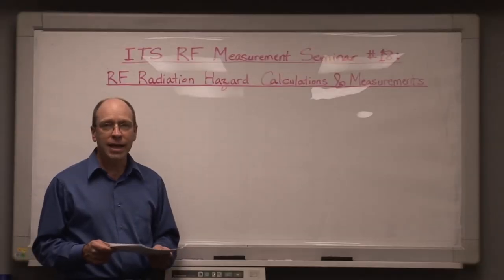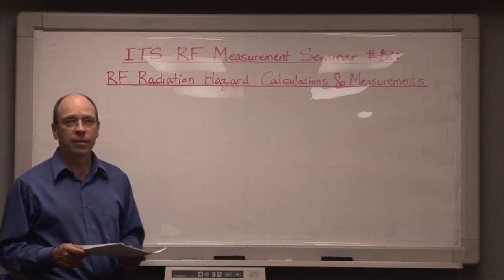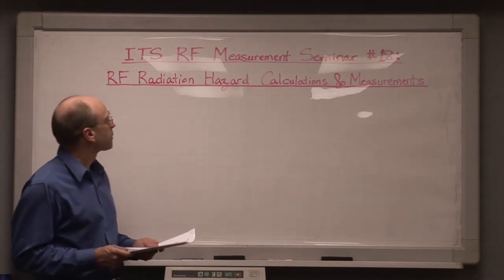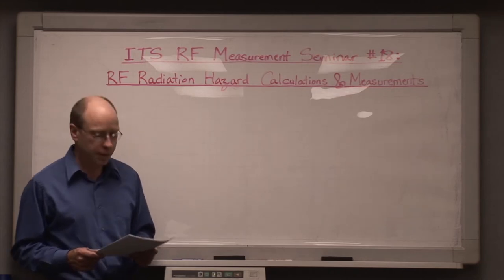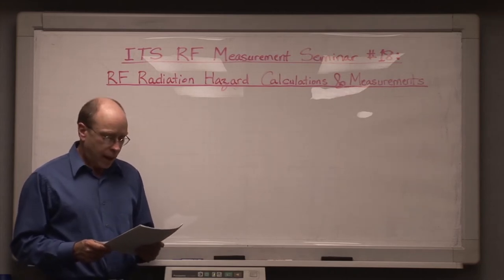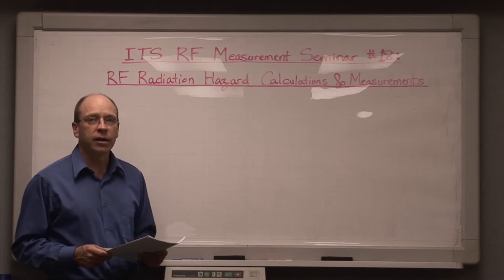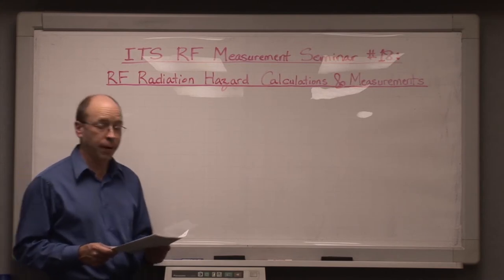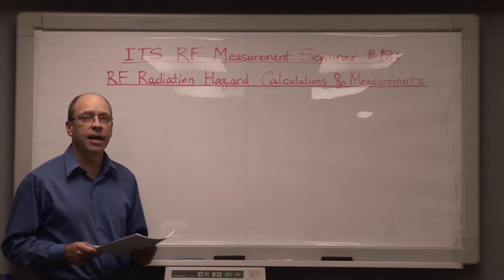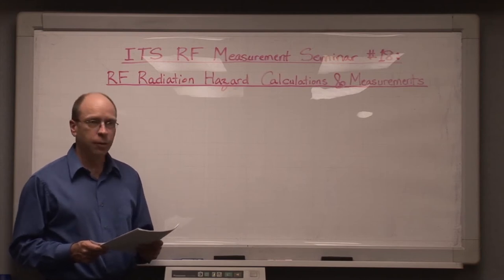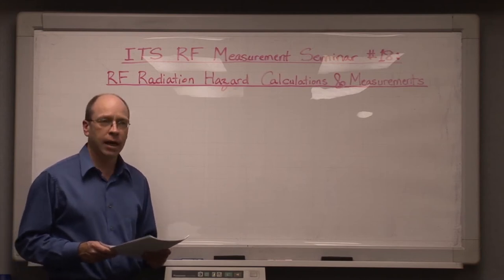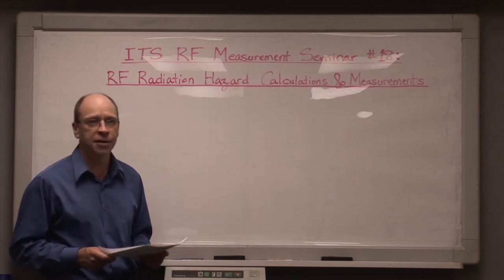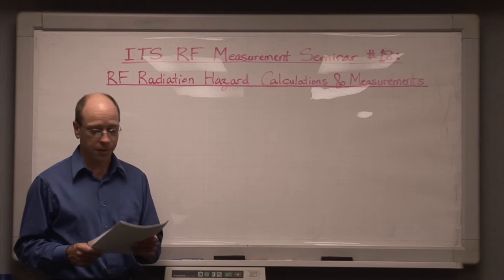Welcome to the 18th RF seminar in the ITS measurement seminar series. The topic of today's talk is RF radiation hazard calculations and measurements. I'll start by talking about the differences between ionizing and non-ionizing radiation so that we can understand why, when we're dealing with radio energy, we're in a category called non-ionizing and why non-ionizing radiation hazard limits are set the way they are.